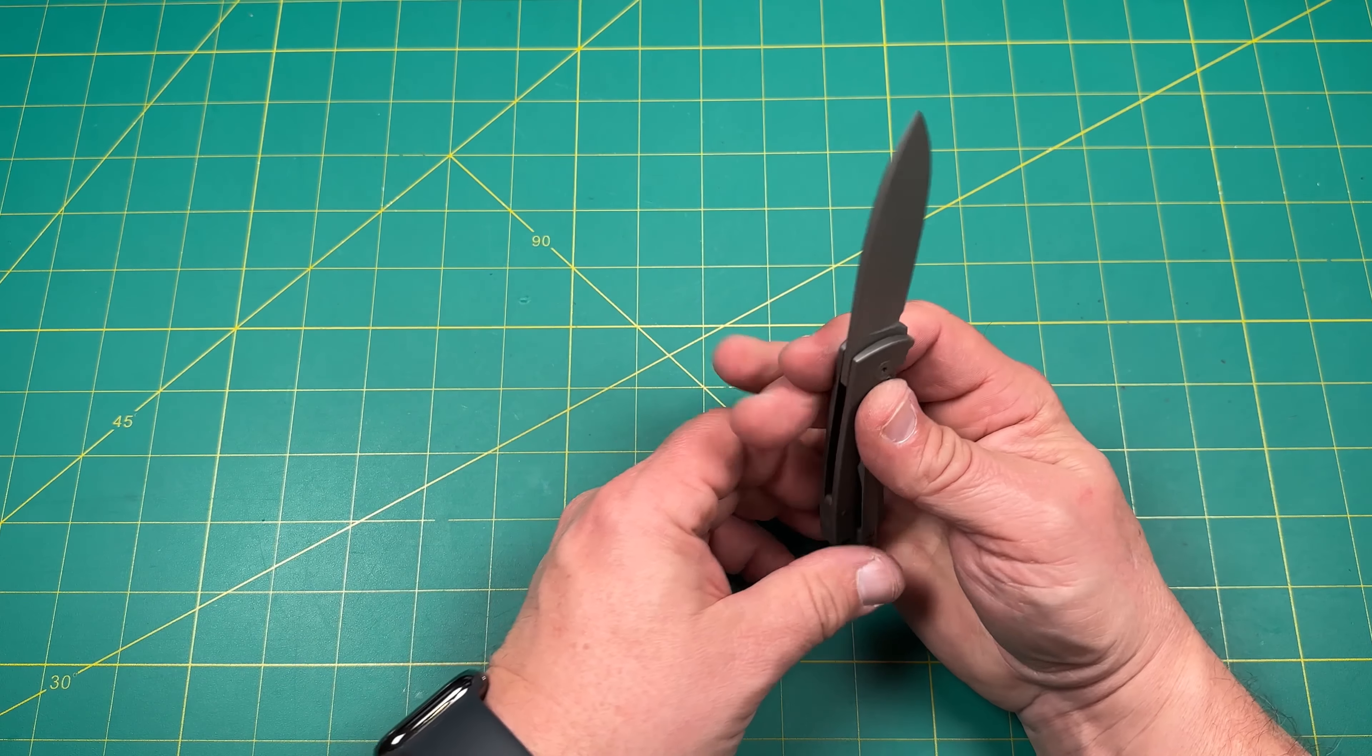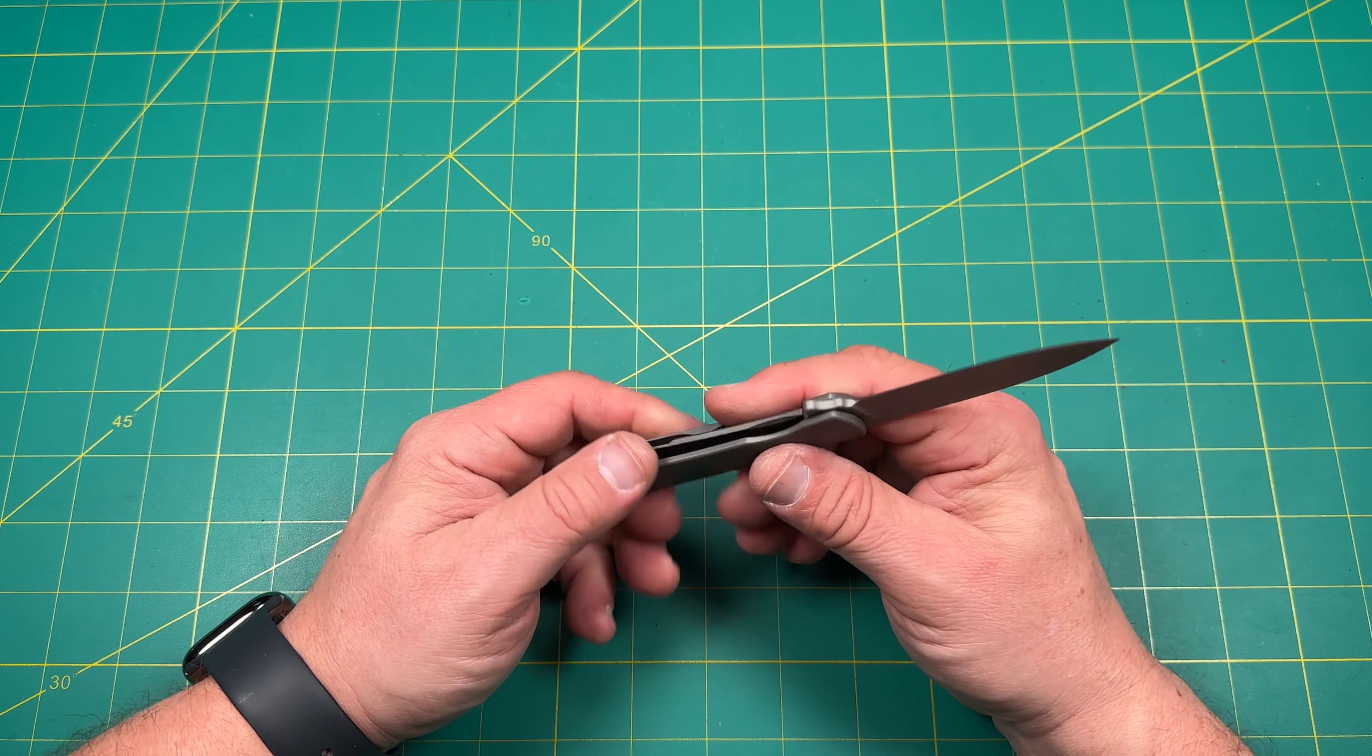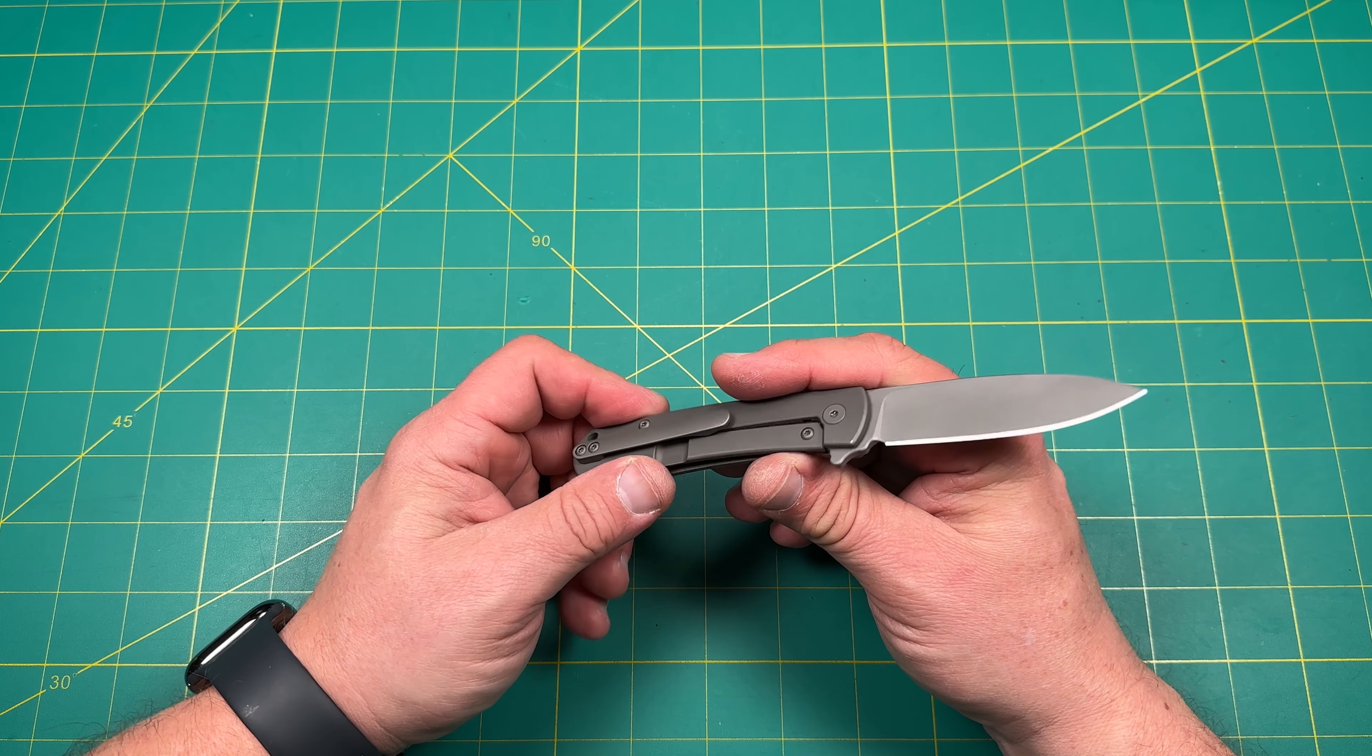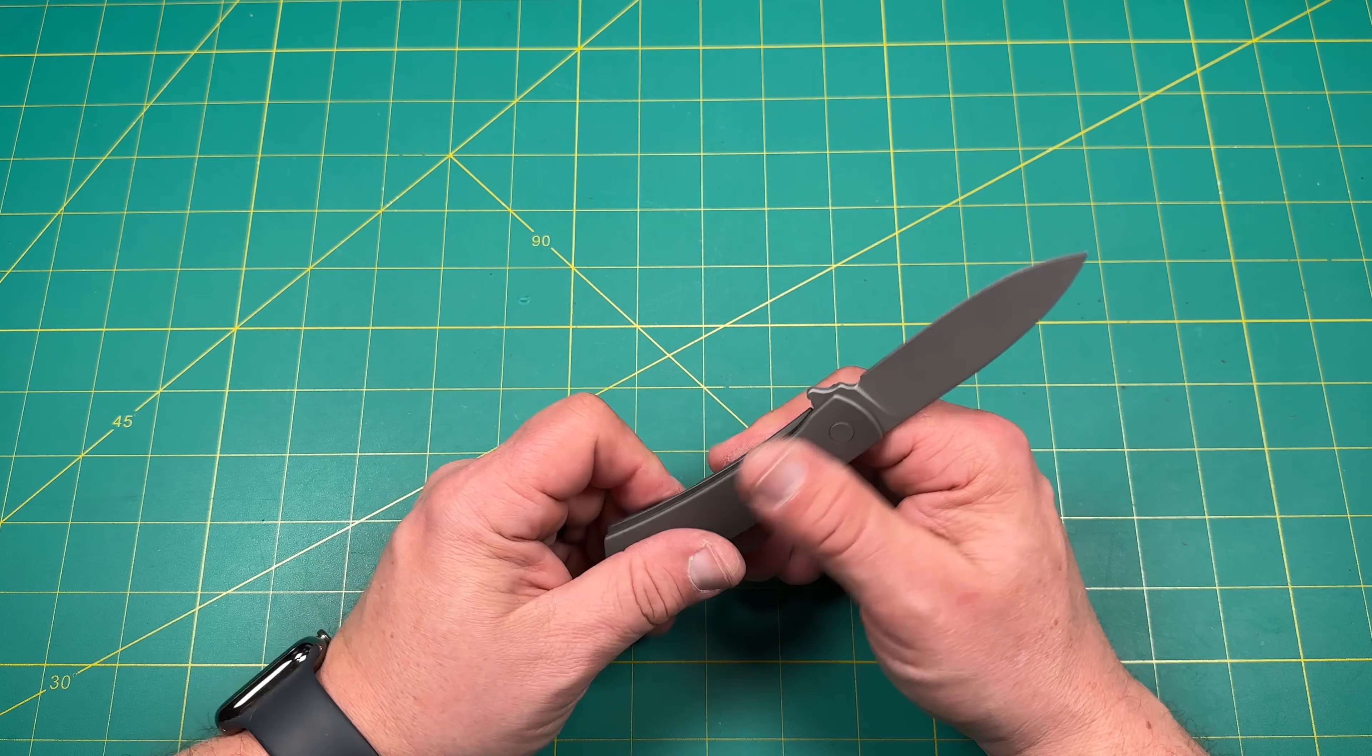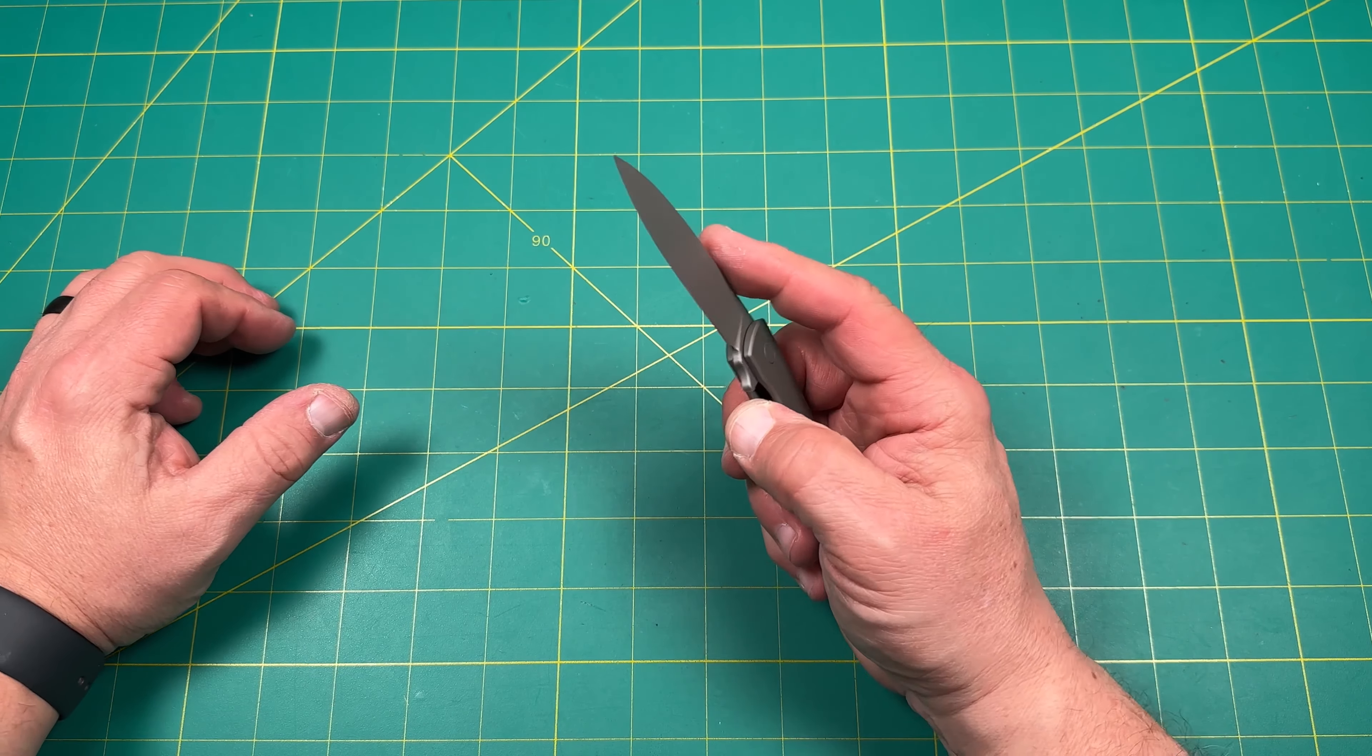I do like this kind of a stonewashed. I don't know what you want to call this. It almost feels like a coating on there, but it's very much an aggressive stonewashed, be blessed stonewashed. Something like that, but it's smooth. It's not going to tear up your pockets. So that's kind of cool.